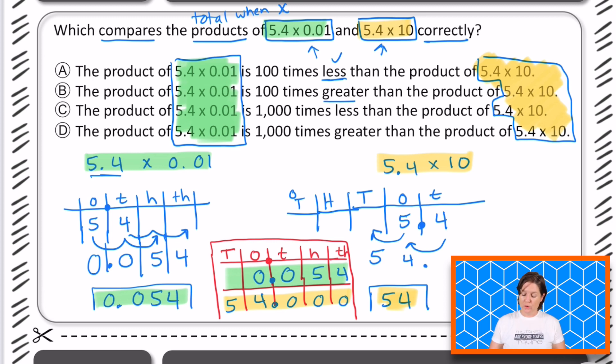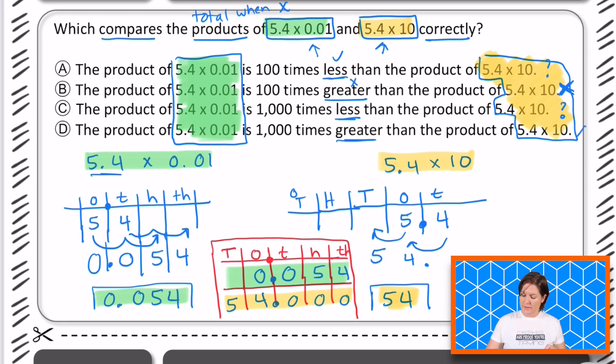Here it says 100 times greater. 54 thousandths is not 100 times greater. So we can eliminate that one. Do that over here. 1000 times less. Well, we're all we're looking for right now is just less. So we're going to keep A, we're going to keep C, and D says 1000 times greater. And that is not what we want. We want one that is less. So we've eliminated two just by doing that.